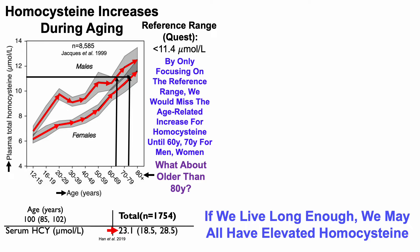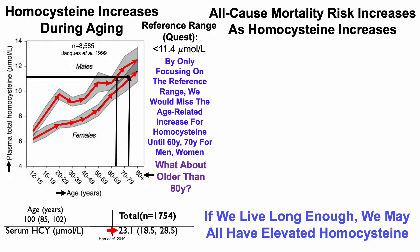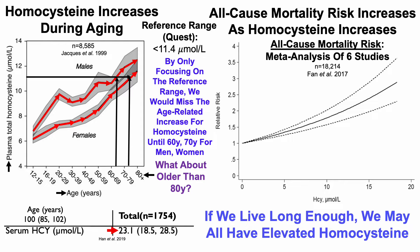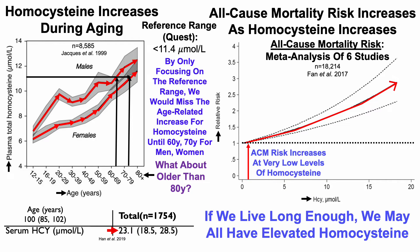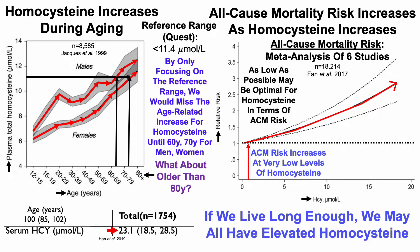In other words, if we live long enough, we may all have elevated homocysteine. Homocysteine is also important because all-cause mortality risk increases as homocysteine increases. We can see that here in an analysis of six studies that looked at all-cause mortality risk's association with circulating levels of homocysteine. On the y-axis we've got relative risk for all-cause mortality plotted against circulating levels of homocysteine on the x-axis. When putting a hazard ratio of one on this graph, we can see by the red line that as homocysteine levels increase, all-cause mortality risk is similarly increased. Note that all-cause mortality risk also increases at very low levels of homocysteine, so as low as possible for homocysteine may be optimal, at least in terms of all-cause mortality risk.